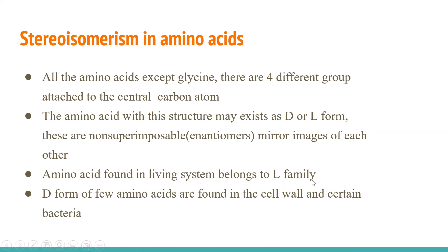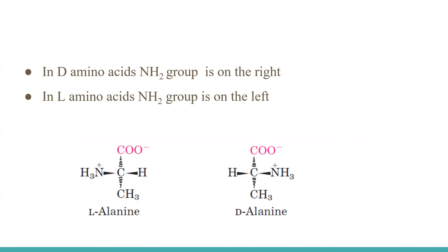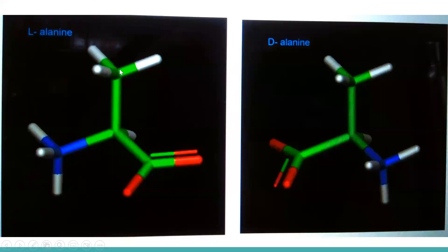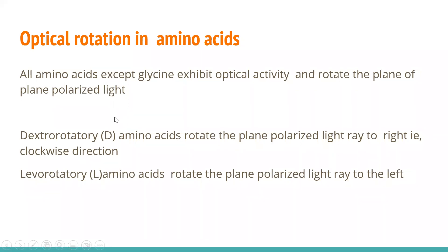D and L forms are non-superimposable mirror images of one another. Amino acids found in the living system belong to the L family. In D amino acids, the amino group is on the right, while in L amino acids, the amino group is on the left side. All amino acids except glycine exhibit optical activity and rotate plane polarized light.